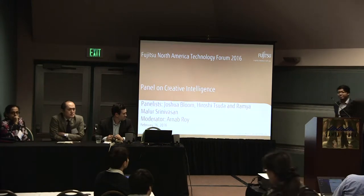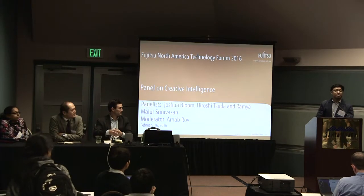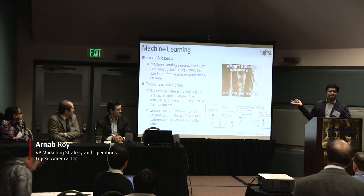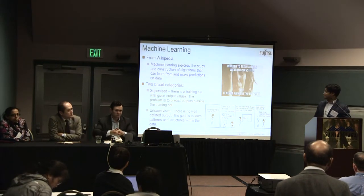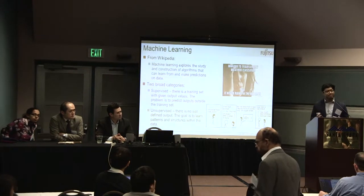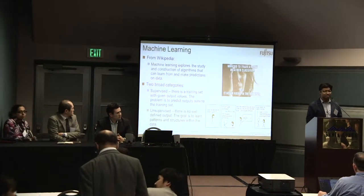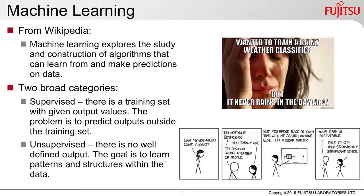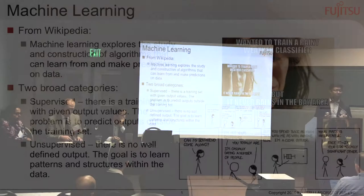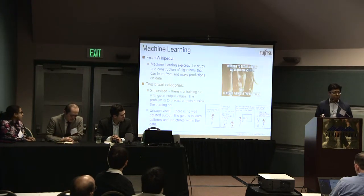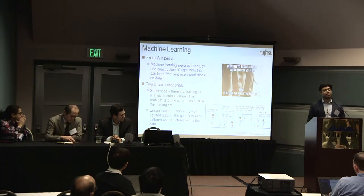Thanks, Kevin. Welcome, everyone, to the panel on creative intelligence. Today's panel features various experts on machine learning, and they will touch on various aspects of machine learning. Machine learning explores the study and construction of algorithms which learn from and make predictions on data. There are two broad categories our panel will touch on: supervised learning, where you have a training set with output values given and predict outputs on unknown data, and unsupervised learning, where there is no well-defined output and the algorithm learns structures and patterns in the data.